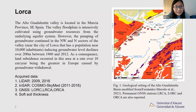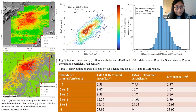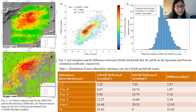This is a geological map of Lorca. This is a vertical velocity map derived from LIDAR and derived from InSAR. This shows the correlation and the differences between LIDAR and InSAR data.